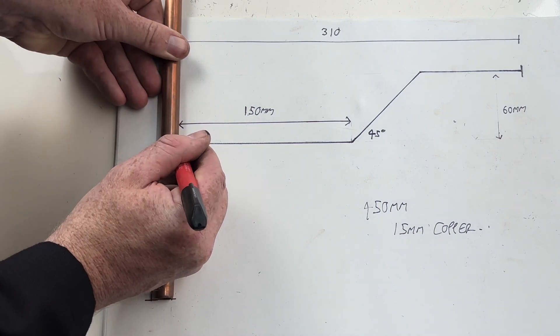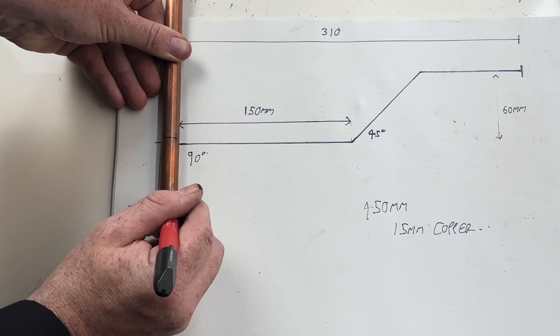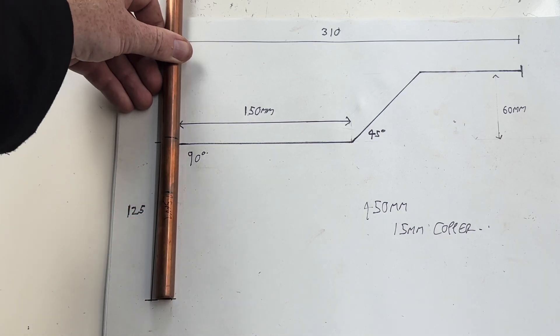So we then draw a line like so where we want the centre of the pipe to be bent to like this.